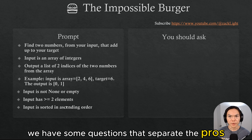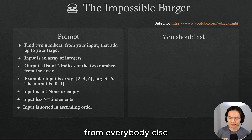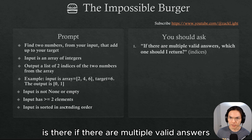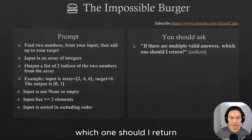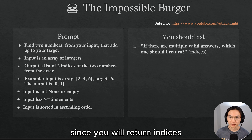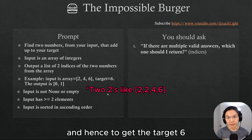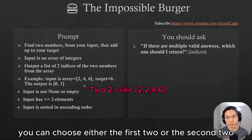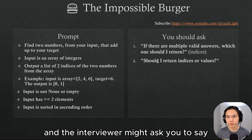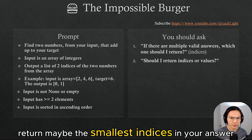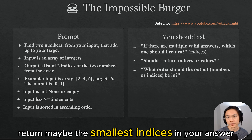So now we have some questions that separate the pros from everybody else. If there are multiple valid answers, which one should I return? Since you are returning indices, it's possible that you get, say, two twos in your input, and hence to get the target six you can choose either the first two or the second two. The interviewer might ask you to return the smallest indices in your answer.